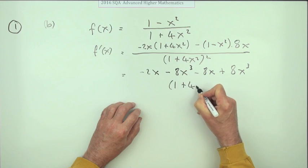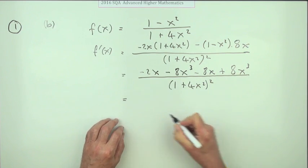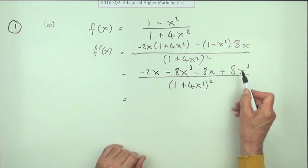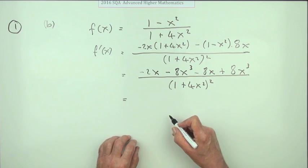All over (1+4x²)² squared. You know the hardest thing so far in this question has been drawing these lines. They cancel out, that comes to negative 10.